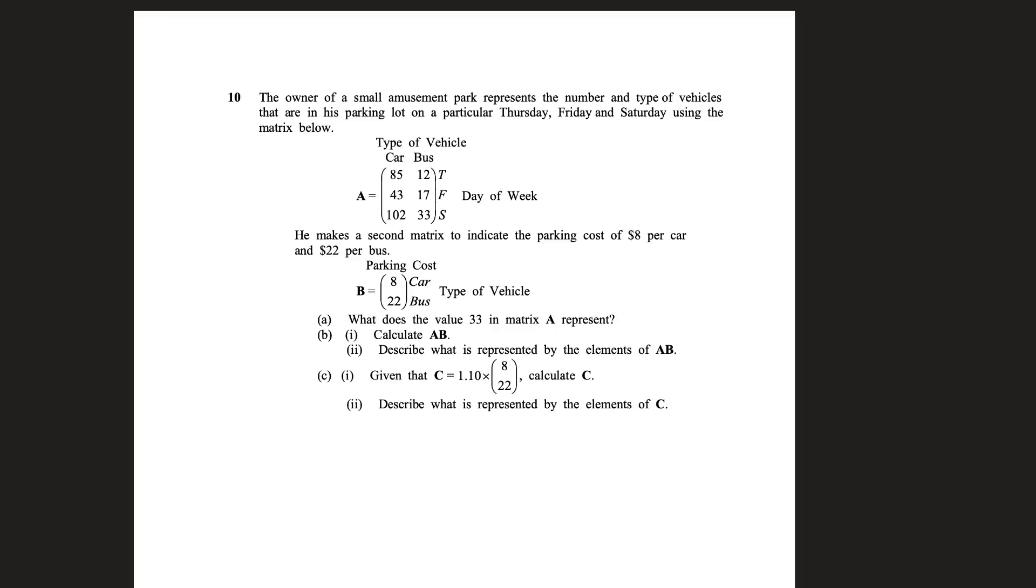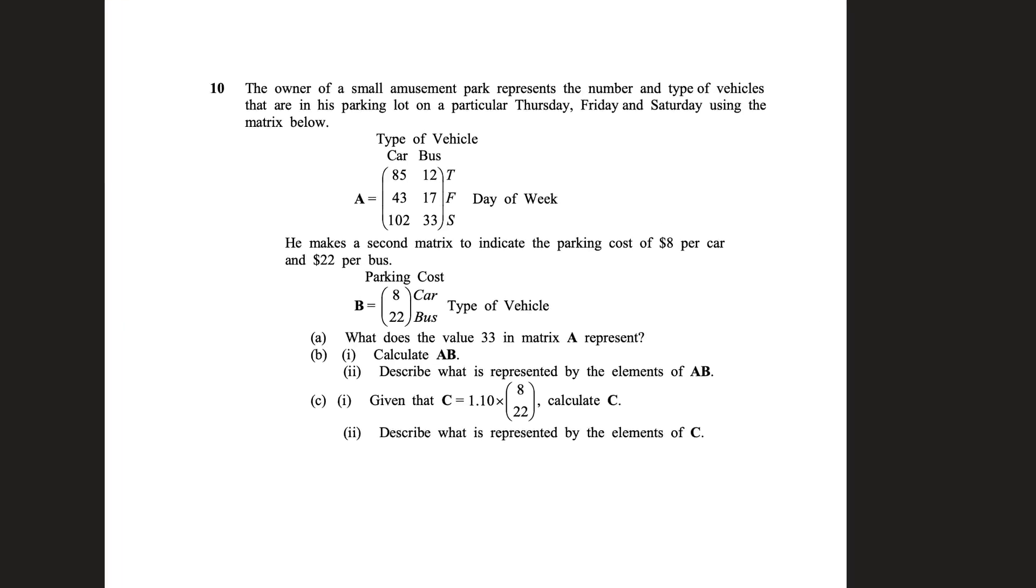Now let's do question 10. The owner of a small amusement park represents the number and type of vehicles that are in the parking lot on a particular Thursday, Friday and Saturday, and they use the matrix below.